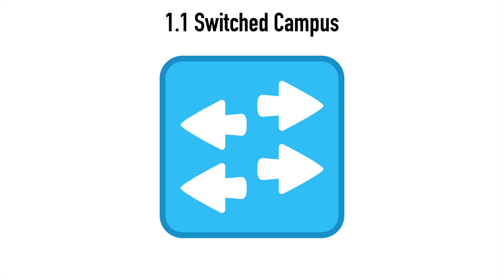That's a look at both Loop Guard and Root Guard, and that also wraps up the CCIE Blueprint section dedicated to switched campus technologies. I'm looking forward to jumping into routing concepts next. I hope you found this content useful — thank you sincerely for watching.